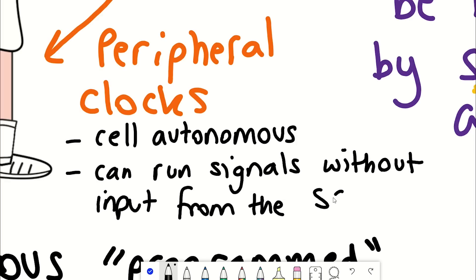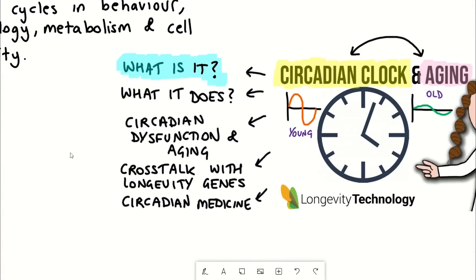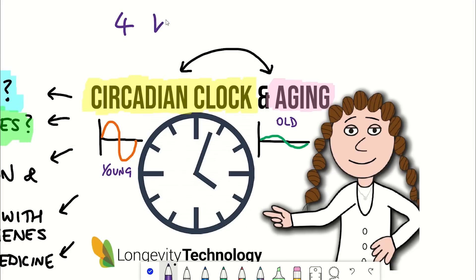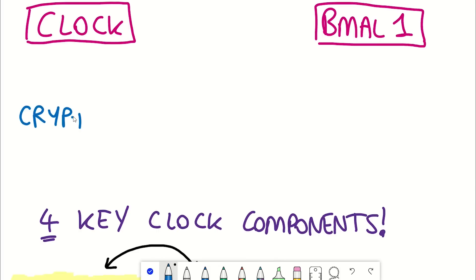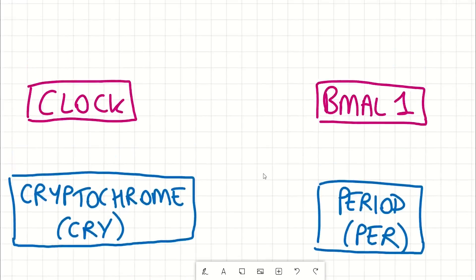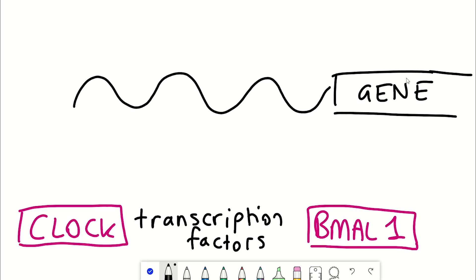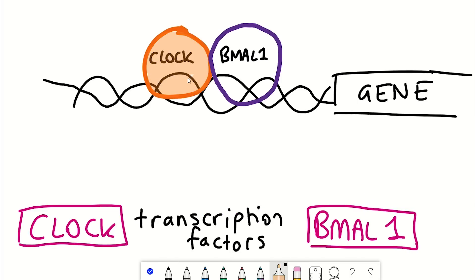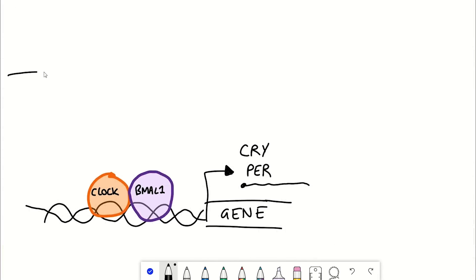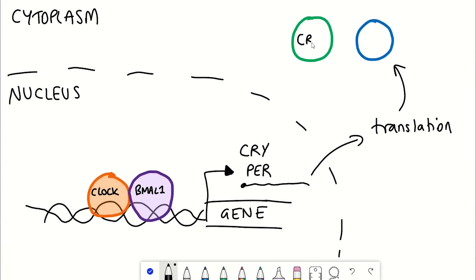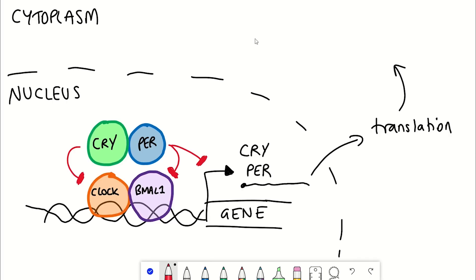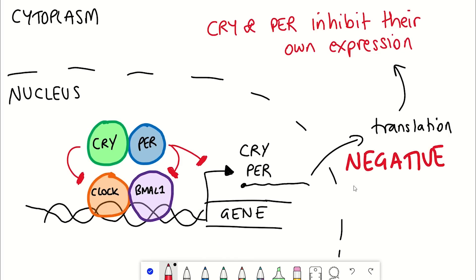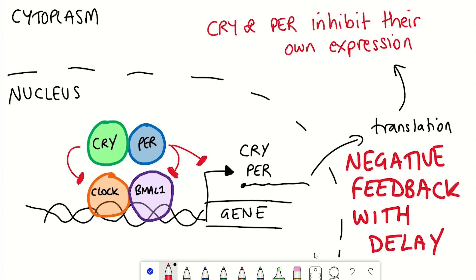How this is achieved is by a very clever biochemical feedback loop. There are four key components: CLOCK, BMAL1, cryptochrome, and period. CLOCK and BMAL1 are both transcription factors — they bind to DNA and regulate gene expression by dimerizing together. Among the genes they upregulate are cryptochrome and period. Cryptochrome and period get expressed and translated in the cytoplasm, but then return to the nucleus where they dimerize and repress the activity of CLOCK and BMAL1, thereby also repressing their own gene expression — creating a negative feedback loop.